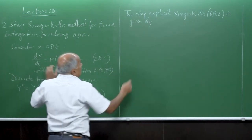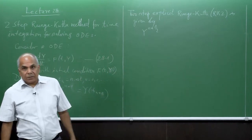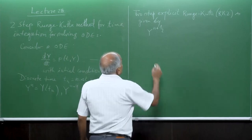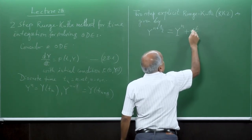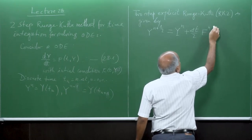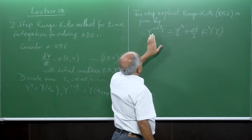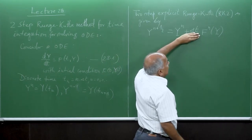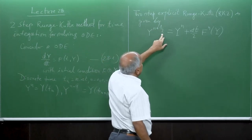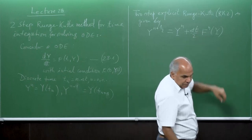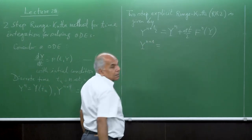So what we do is: first, we compute y_{n+1/2} at the intermediate time level — not n+1. In the explicit Euler we had n+1. Here the first step computes y_{n+1/2} = y_n + (delta_t / 2) * F(t_n, y_n).